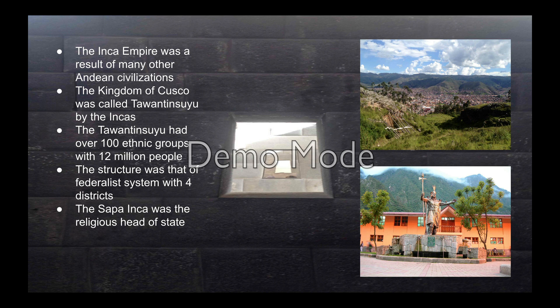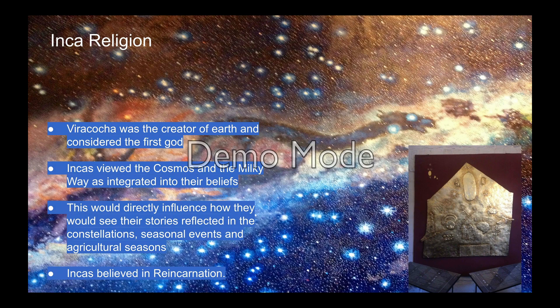The Sapa Inca was the religious head of state, and Cusco was the capital of the Incas. Viracocha was the creator of Earth and considered their first god. The Incas viewed the cosmos and the Milky Way as integrated into their beliefs, directly influencing how they saw stories reflected in constellations, seasonal events, and agricultural seasons. The Incas believed in reincarnation. Rather than reading individual stars, they looked at dark shapes in the Milky Way, like the llama shape you can see there.